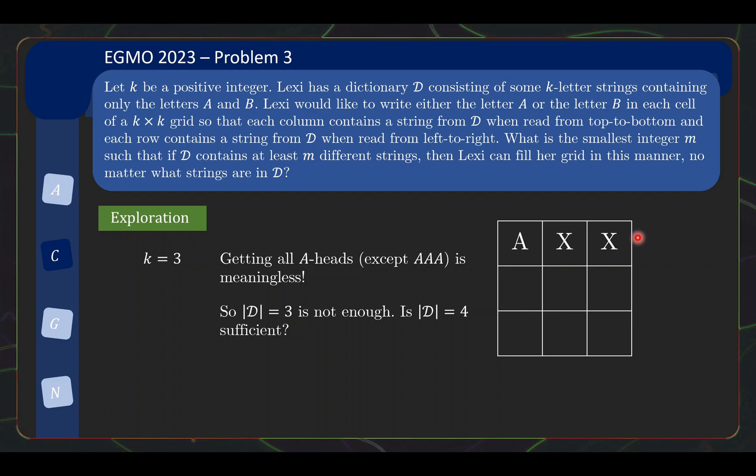Then the question is, is D equals 4 enough, because that will force you to at least have a B-head as well as at least an A-head? Let's try out a special case and see what happens. So let's say you have a B-head given to us, BBA, and we still have all the A-heads. So let's say D in this case is this. Are we able to fill up the grid in this particular special case?